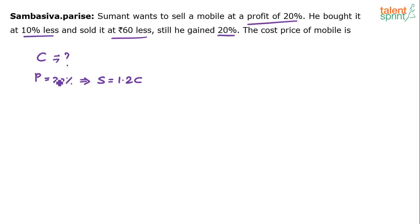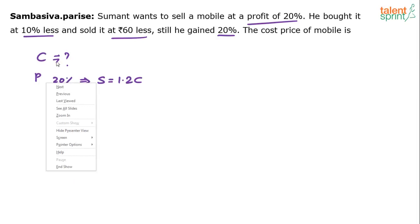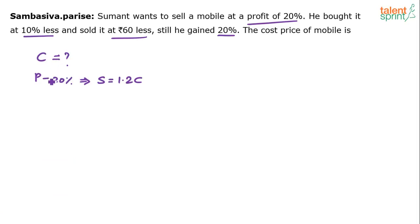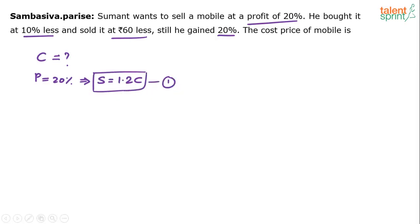These are all basics of profit and loss. If the profit is 20%, the selling price will be 120% of the cost price. 120% is equal to 1.2 times — 120 by 100 which is 1.2C. So this is equation number 1: selling price has to be 1.2 times of C.